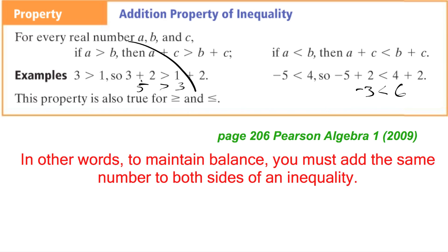To summarize: in other words, to maintain the balance, you must add the same number to both sides of an inequality. So when you're solving an inequality and trying to isolate the variable, whatever you do to the left, you have to do to the right.